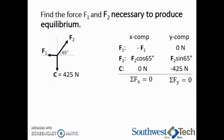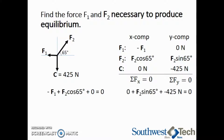Using this idea of equilibrium, we can add all of the forces in x and set them equal to 0, so negative F1 plus F2 cosine of 65 degrees plus 0 equals 0. In y, we have 0 plus F2 sine of 65 degrees plus negative 425 newtons equals 0.